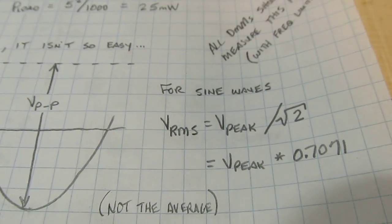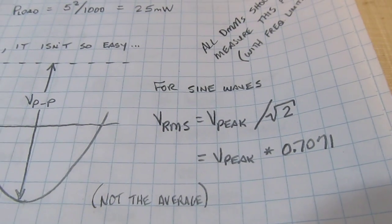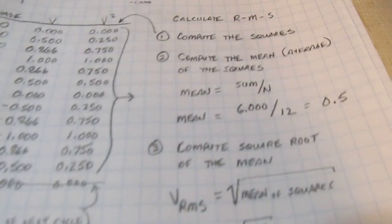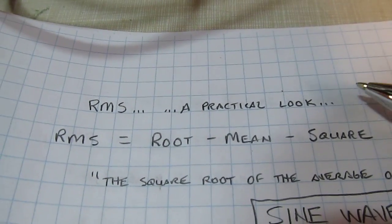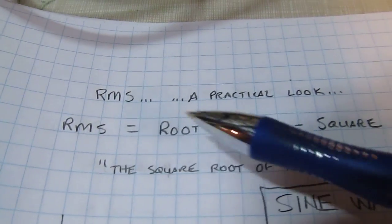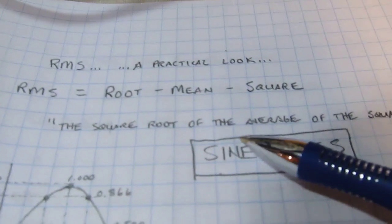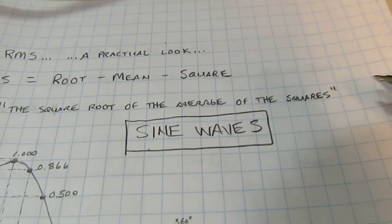Now we're not going to go through the calculus that would actually show where that factor comes from, but we'll just kind of prove it from a practical standpoint. So let's take a practical look at it. The RMS stands for root mean square. In other words, it's taking the square root of the average of the squares, the square voltages.